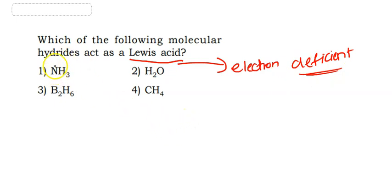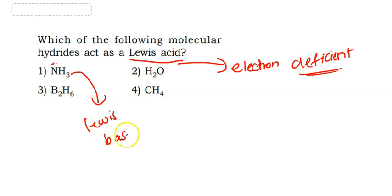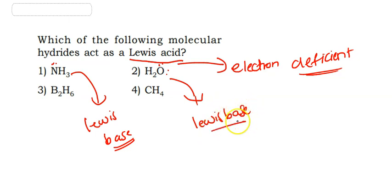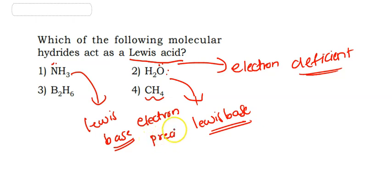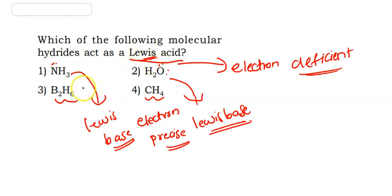For NH3, it has a lone pair, so it is a Lewis base, not a Lewis acid. H2O is also a Lewis base. CH4 is electron-precise. But B2H6 is electron-deficient, so it acts as a Lewis acid. The answer is option 3, B2H6.